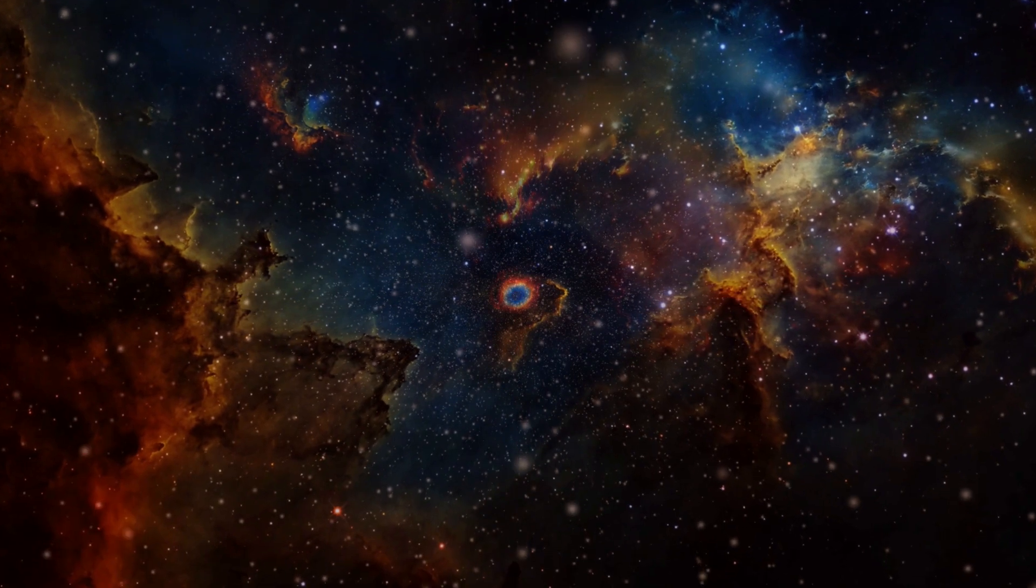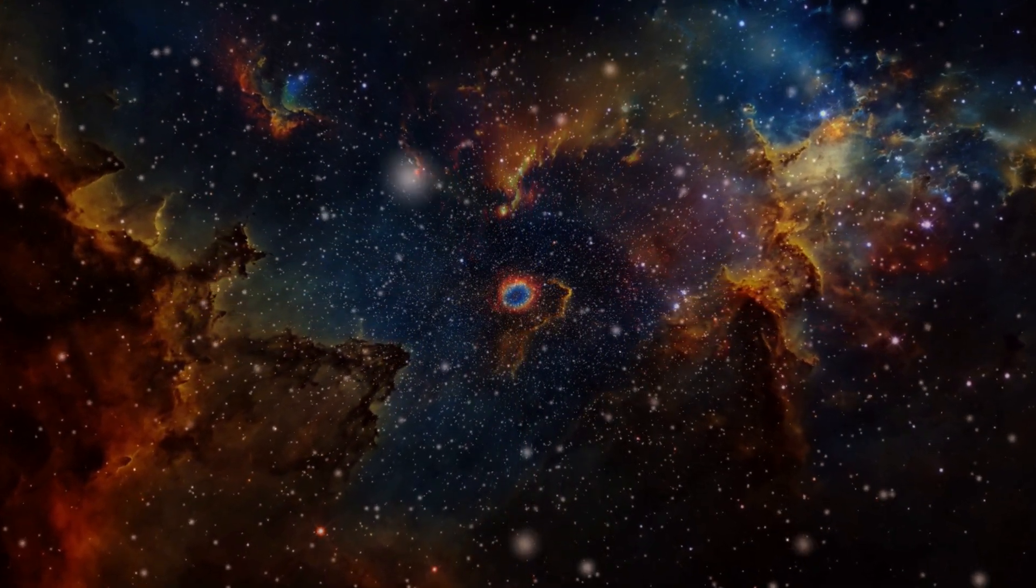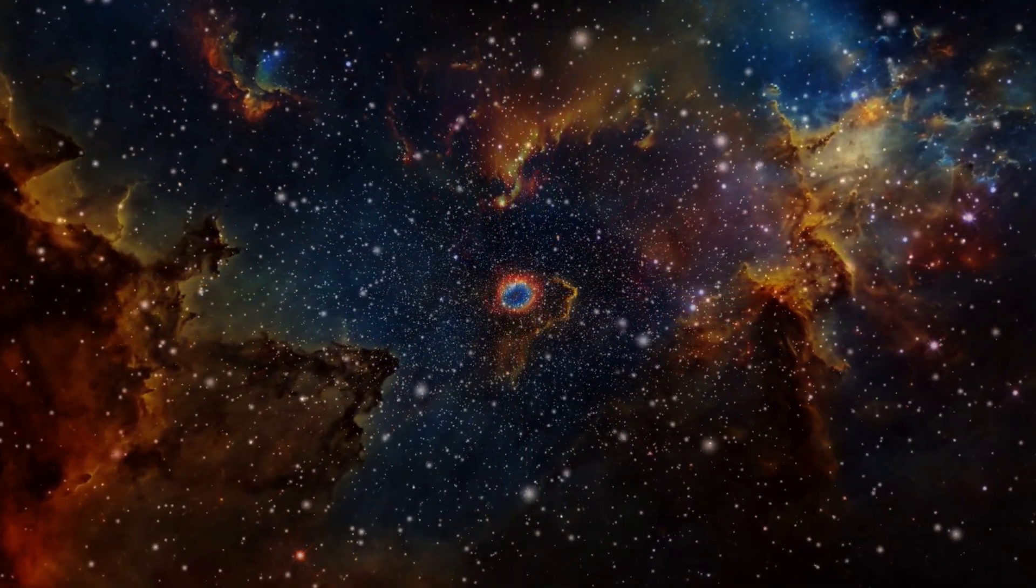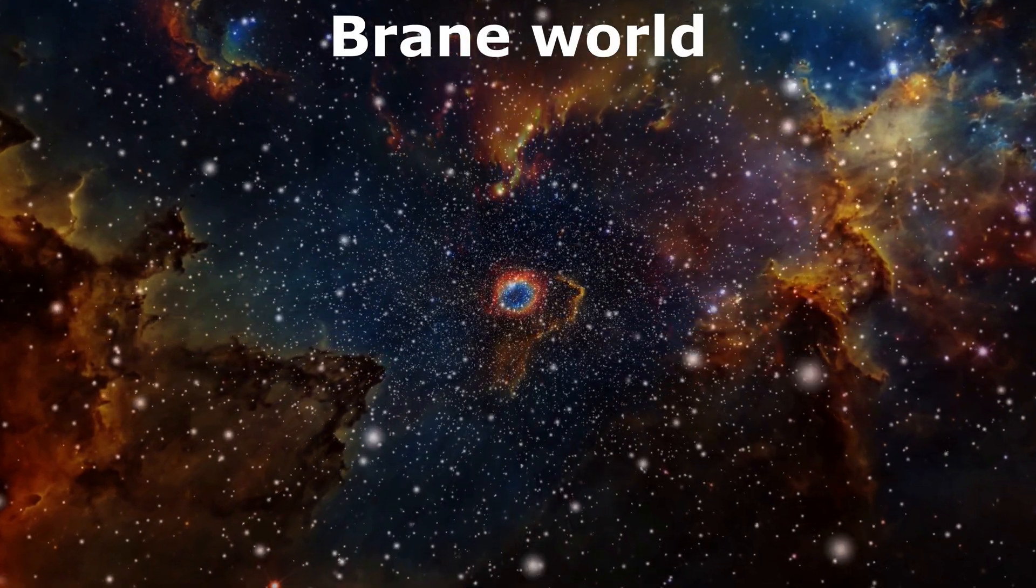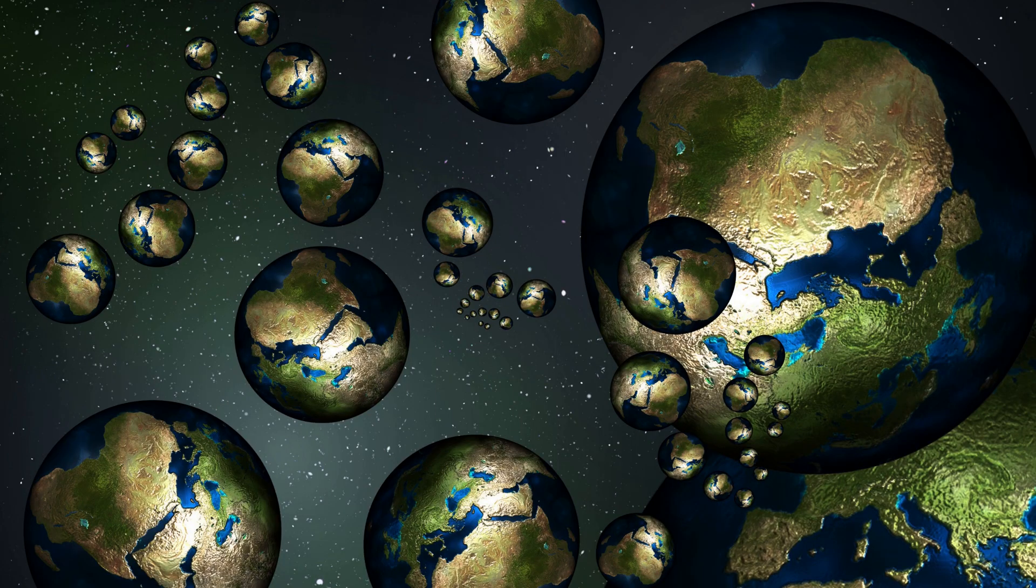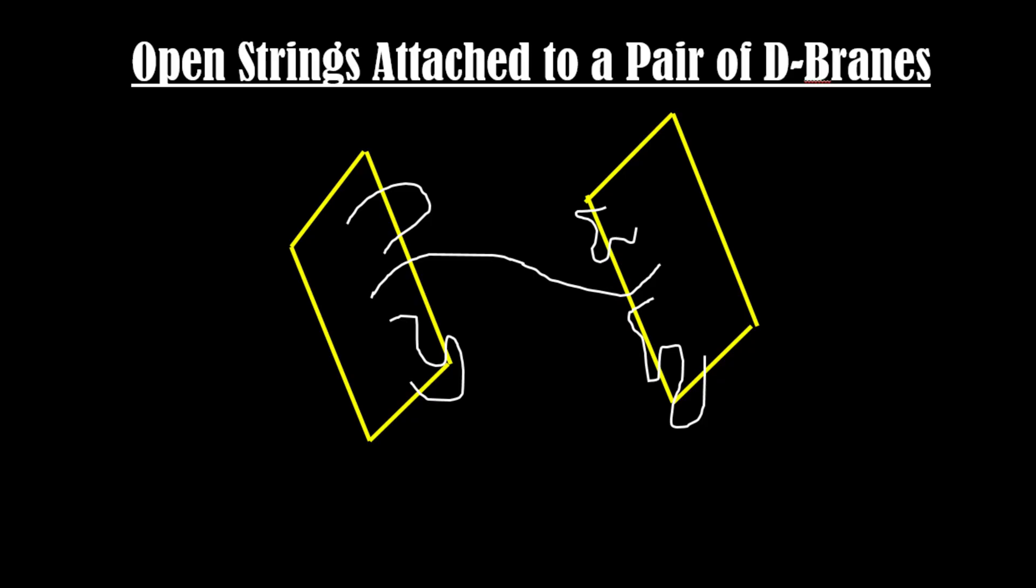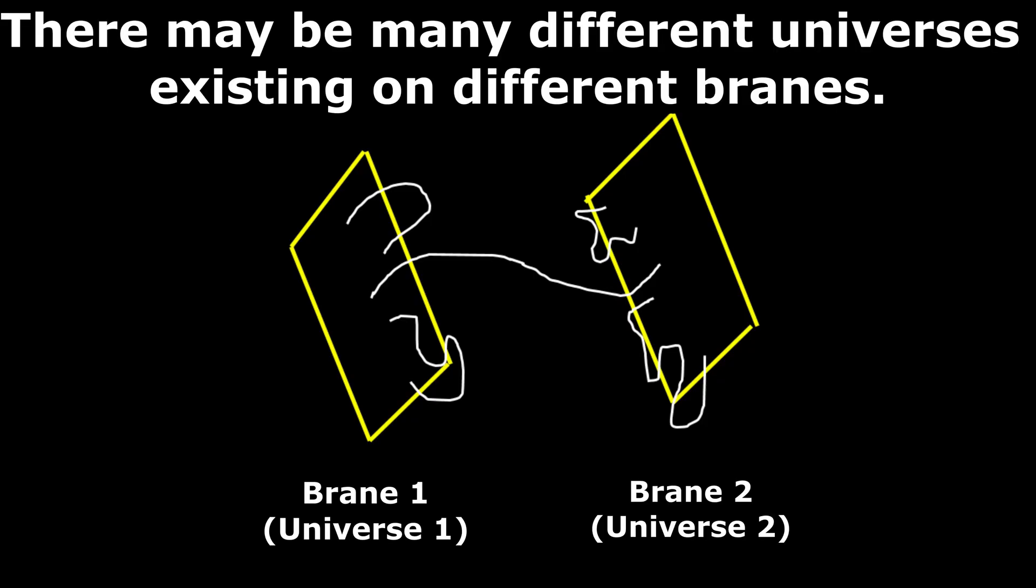M-theory suggests that our universe may exist on a brain of its own, known as the brain world. This idea is part of the larger concept of the multiverse, in which there may be many different universes existing on different brains.